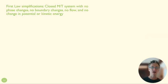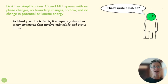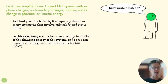One final simplification is this really long list of assumptions here: closed M/T system, no phase change, no boundary change, no flow, no change in potential or kinetic energy. That seems a little ridiculous to have that many assumptions, but it actually describes a lot of systems that just have—if we're talking just about a solid or a static fluid—and it reduces that equation quite considerably.